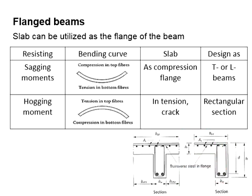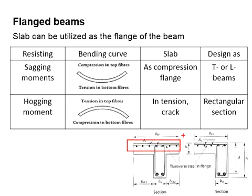The flange is beneficial to the beam in terms of moment resistance. It alters the section property, increases the beam strength, and leads to a smaller area of tensile steel. However, we need to provide transverse steel in the flange in order to ensure it functions properly.